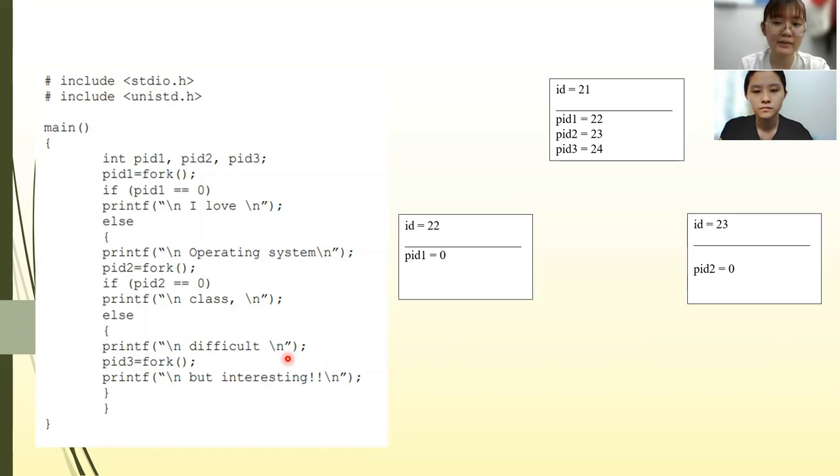Hence, at PID3 equals to 24, and at ID equals to 24, PID3 equals to 0.